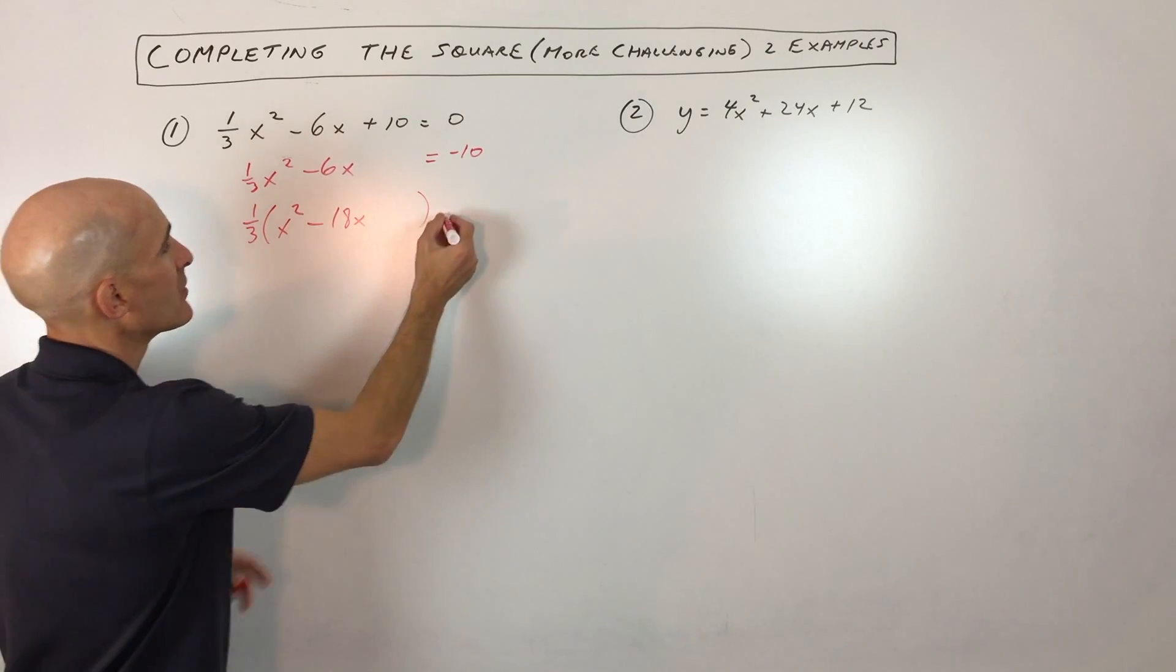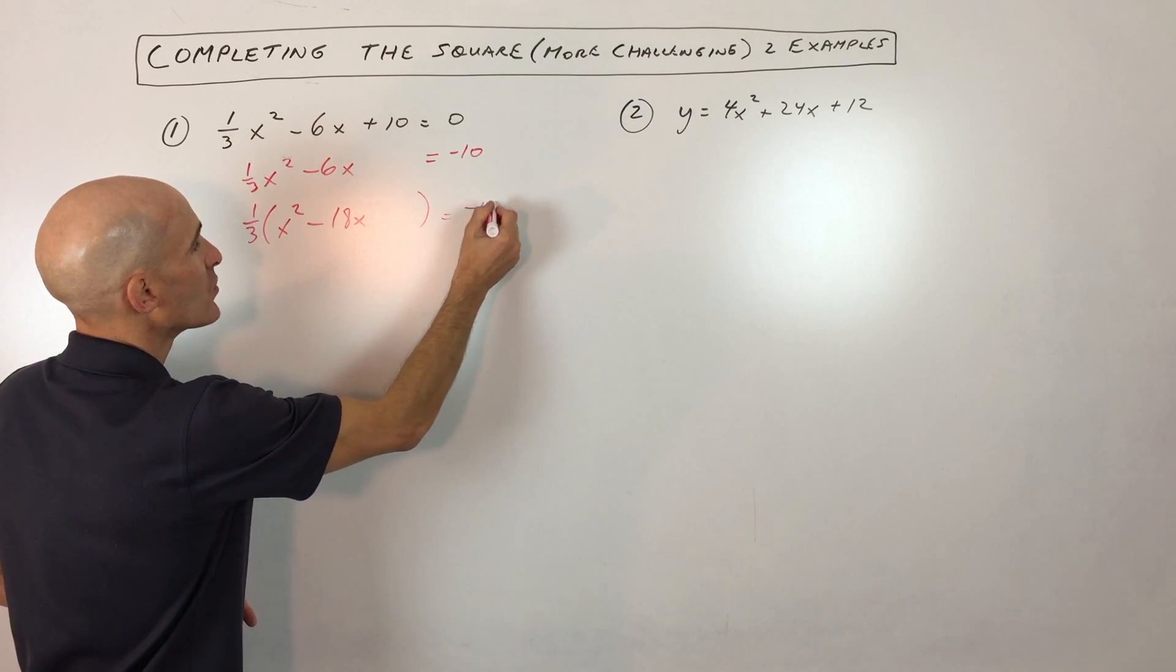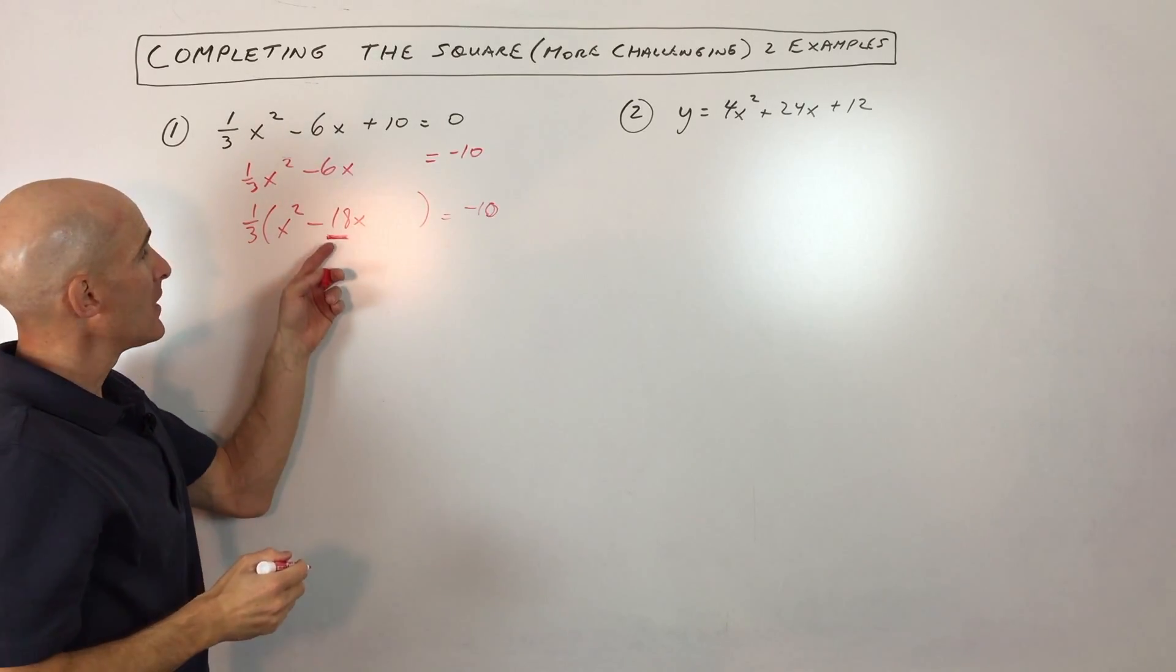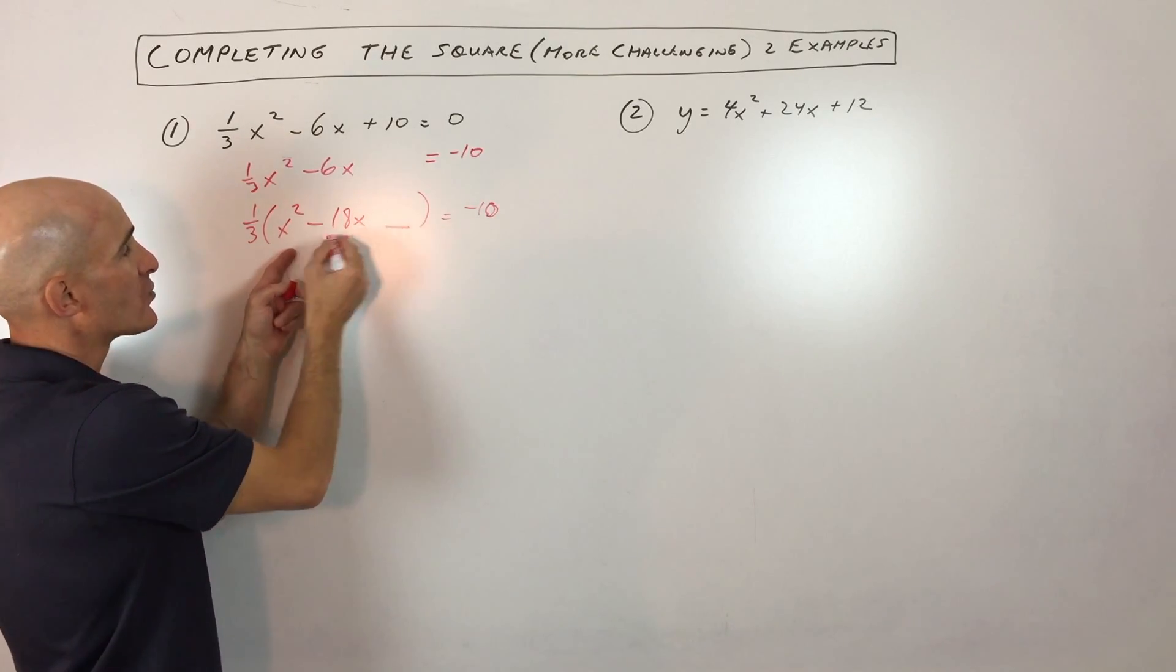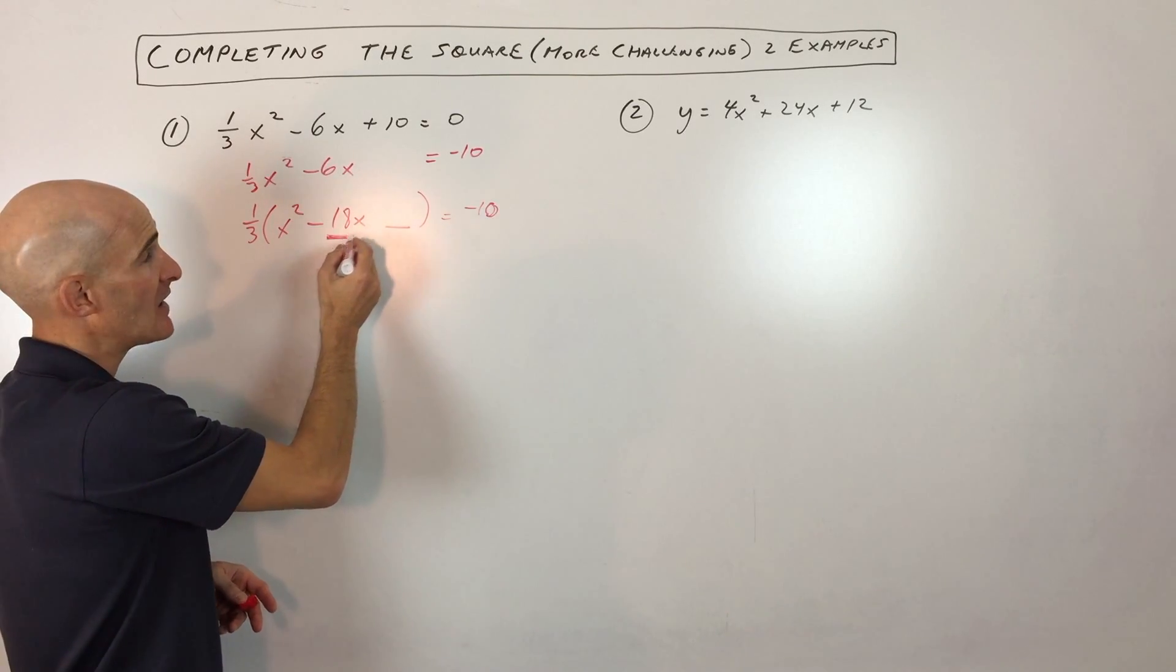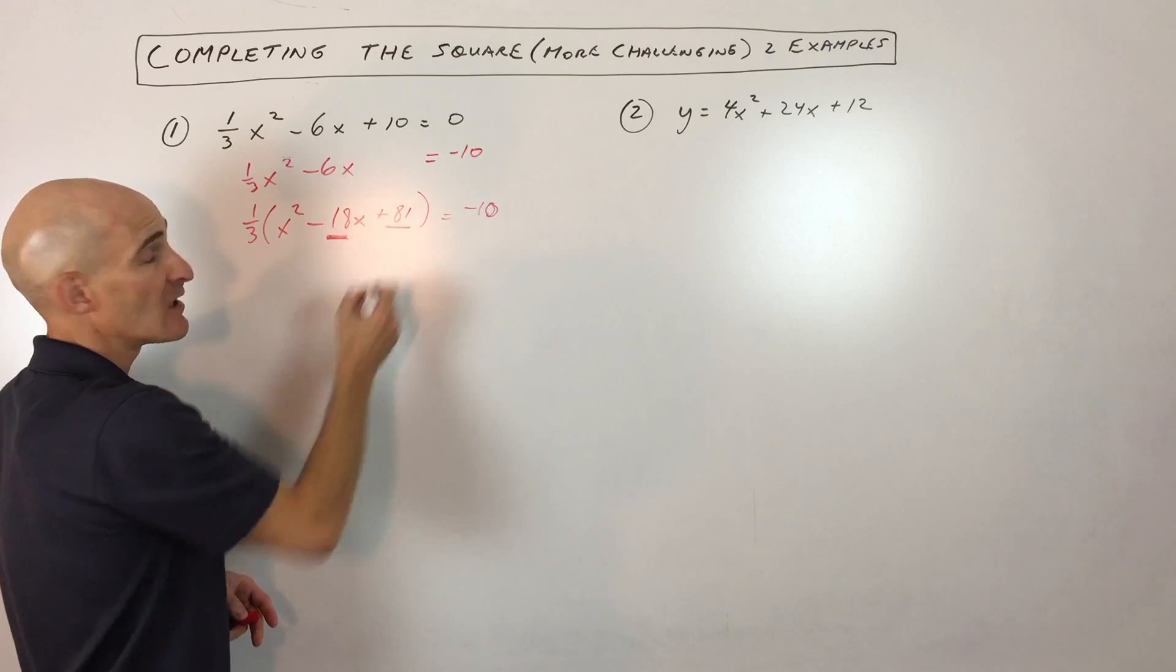So the next step here is you want to complete the square. And so what you would do is you would take half of this middle coefficient here and square it. So half of negative 18 is negative 9 and negative 9 squared is 81.